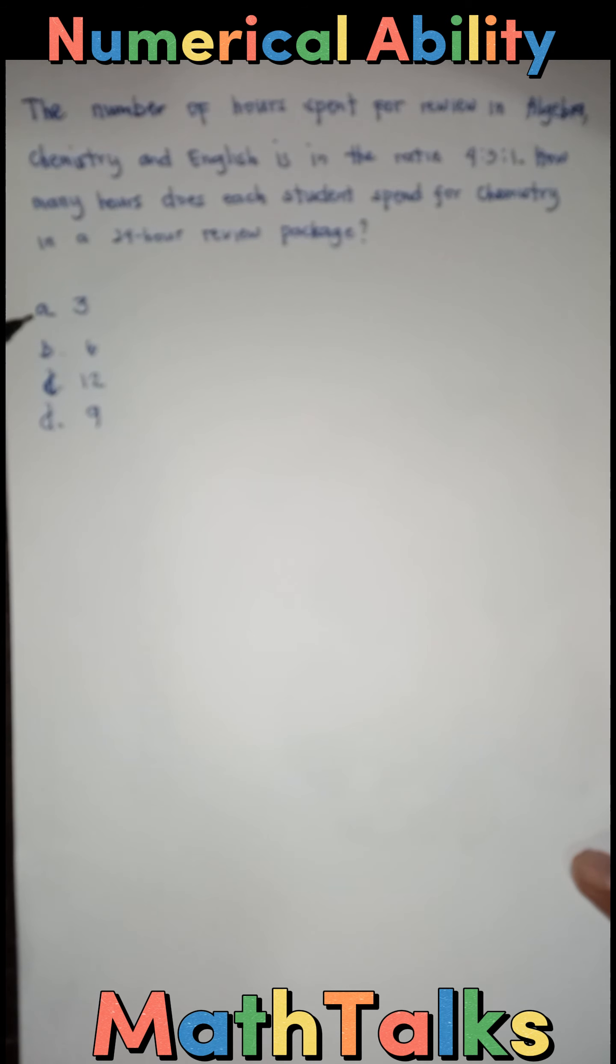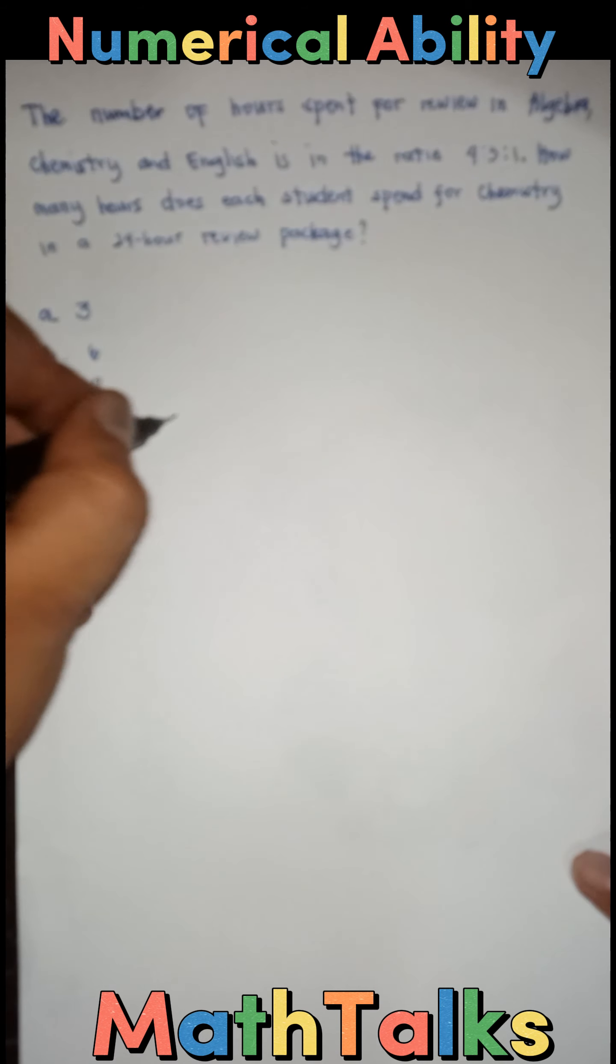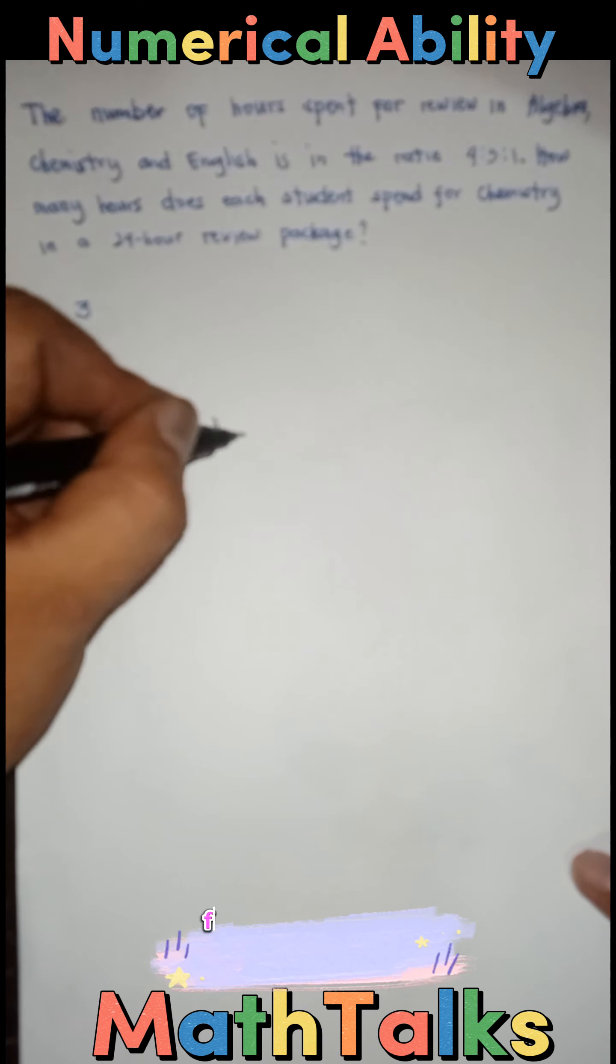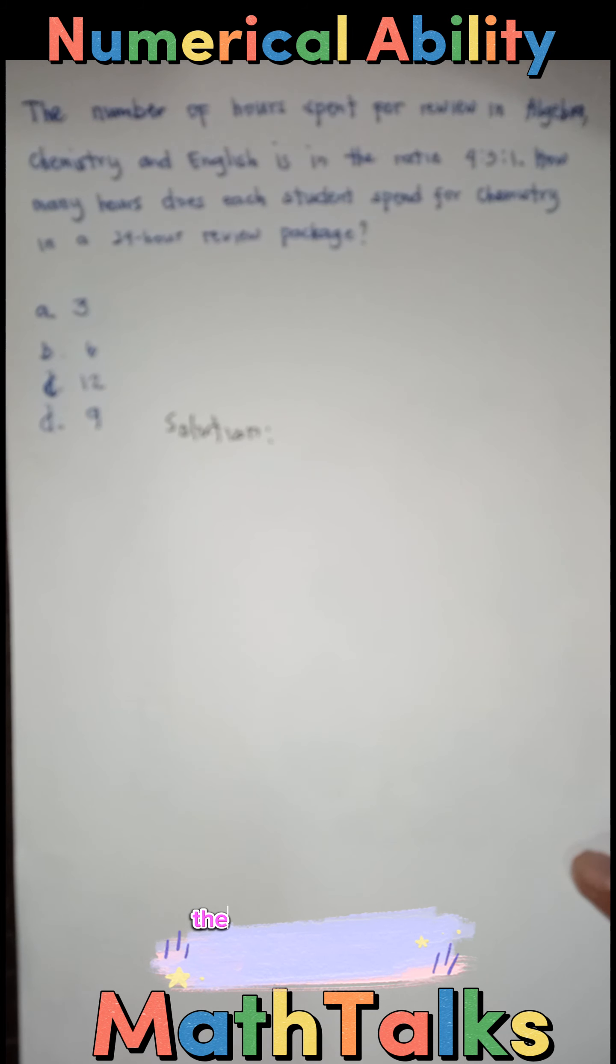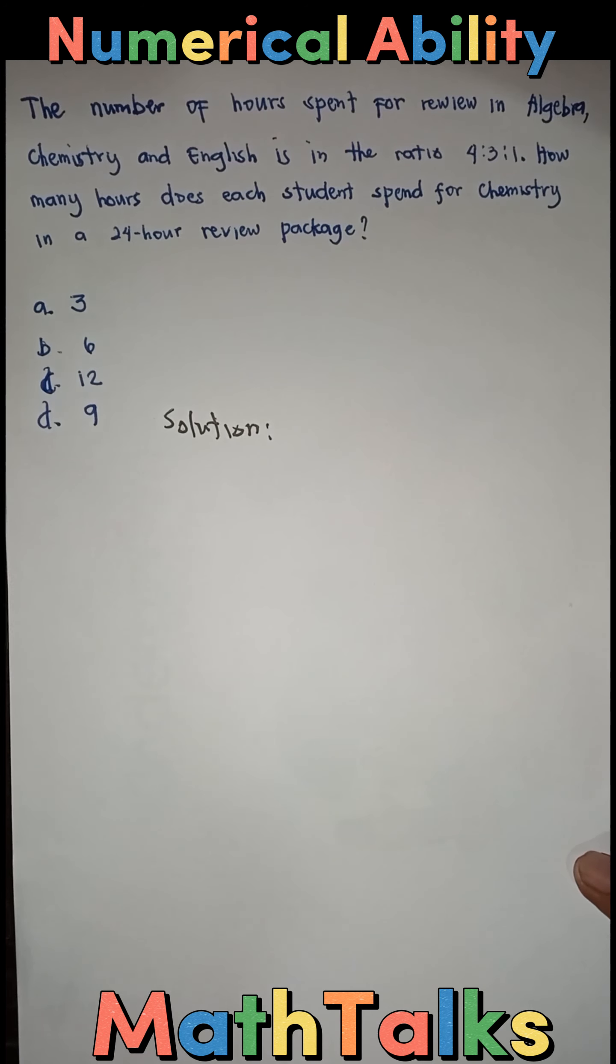So choices are A, 3, B, 6, C, 12, D, 9. The solution. First thing that you must observe here is the given question is an example of a ratio and proportion. Basically,